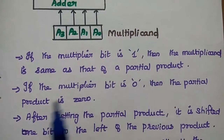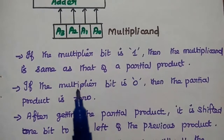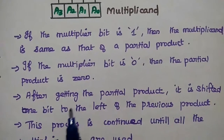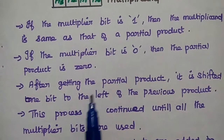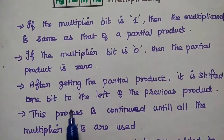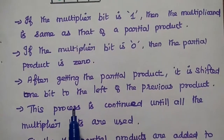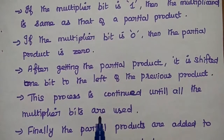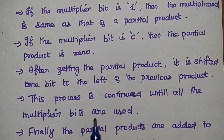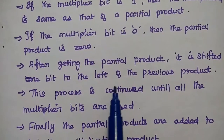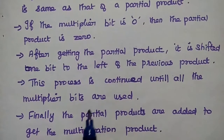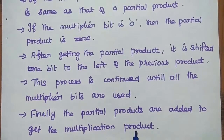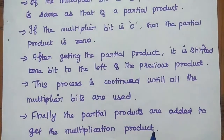If the multiplier bit is 1, then the multiplicand is the same as the partial product. If the multiplier bit is 0, then the partial product is 0. After getting the partial product, it is shifted 1 bit to the left of the previous product. This process is continued until all the multiplier bits are used. Once all the multiplier bits are multiplied with the multiplicand, we stop.